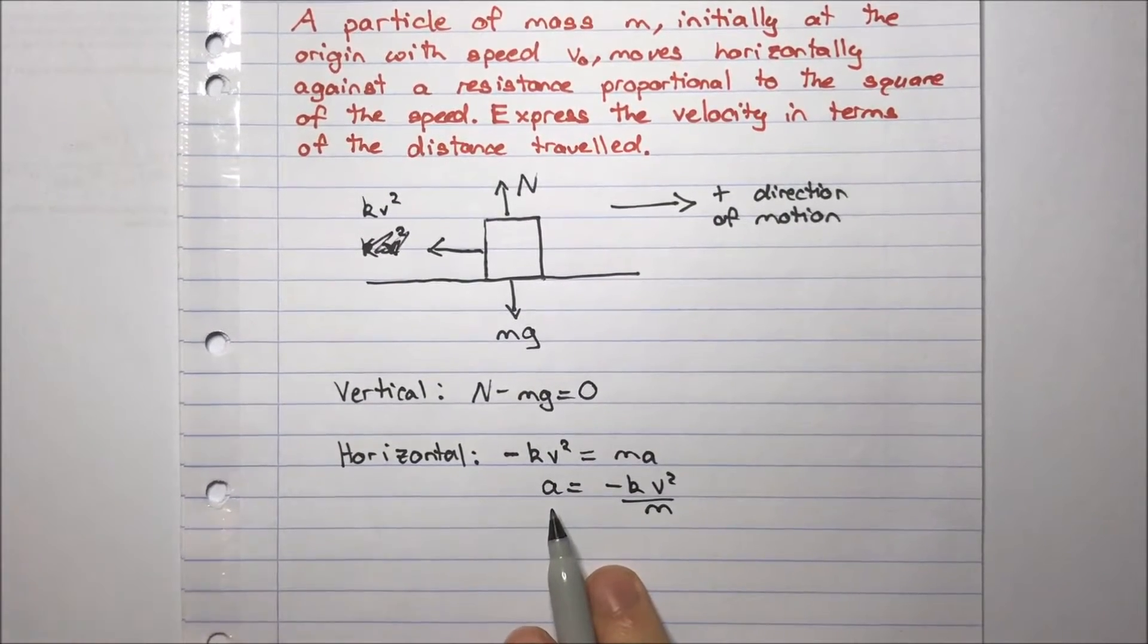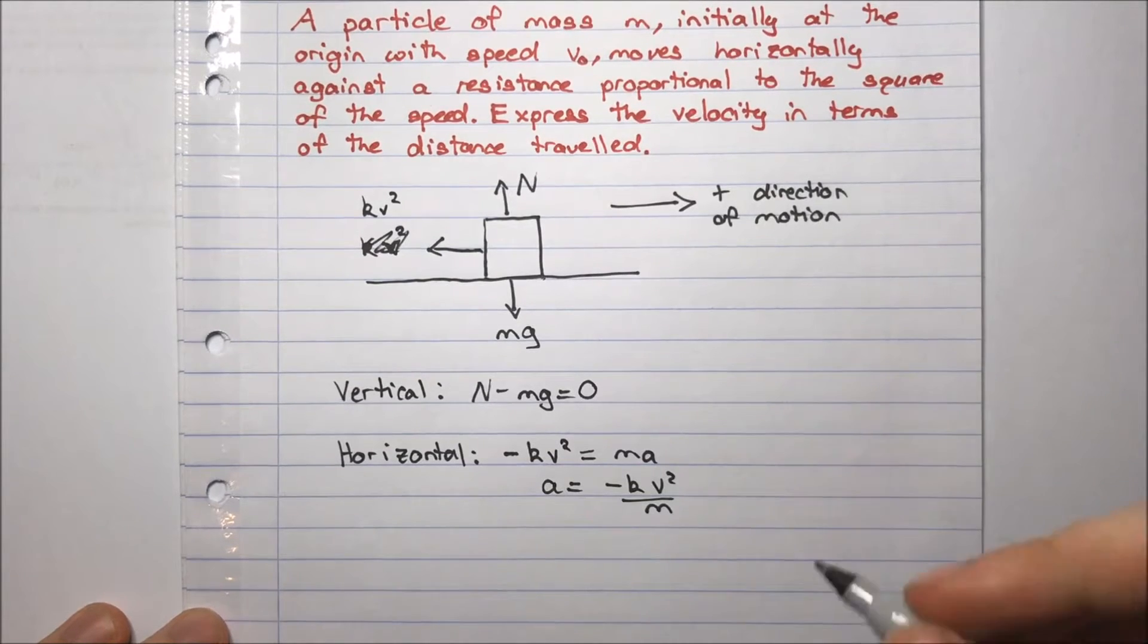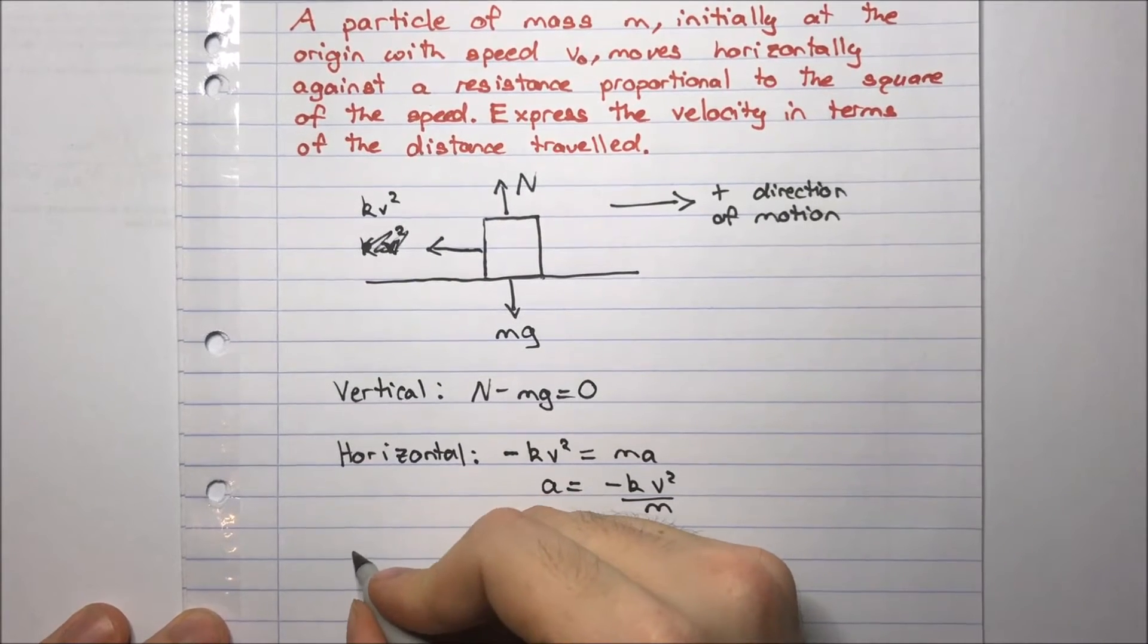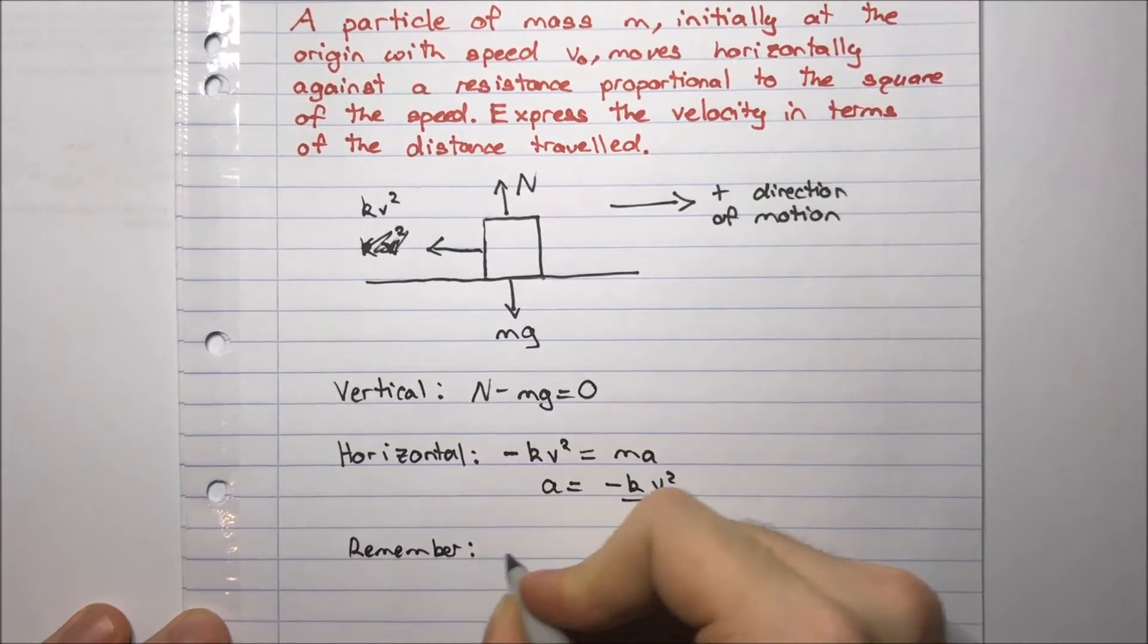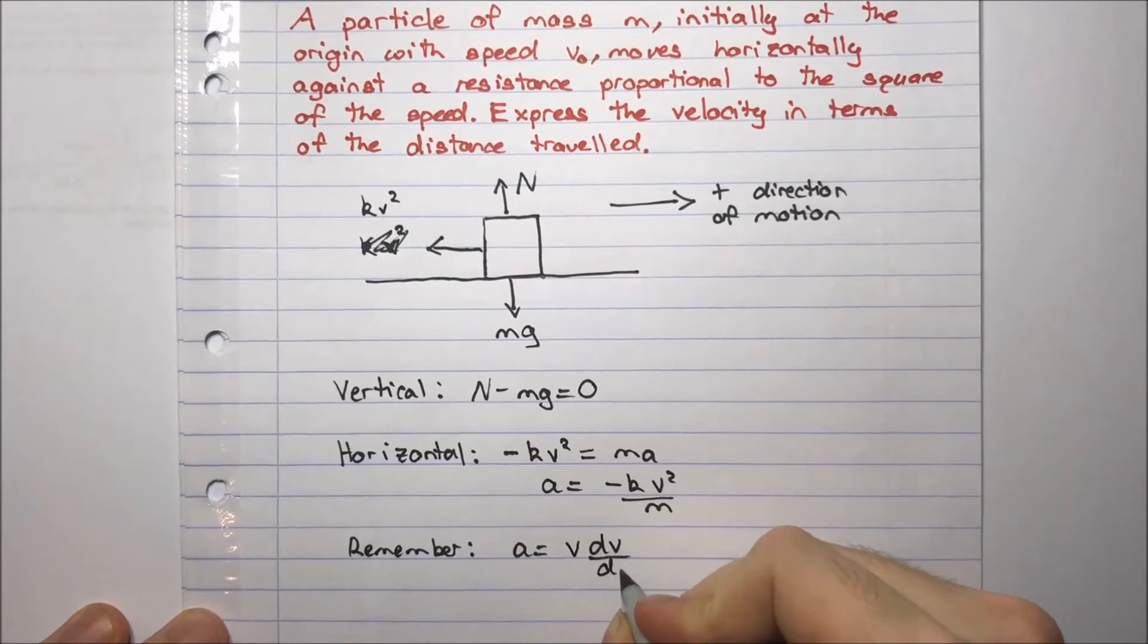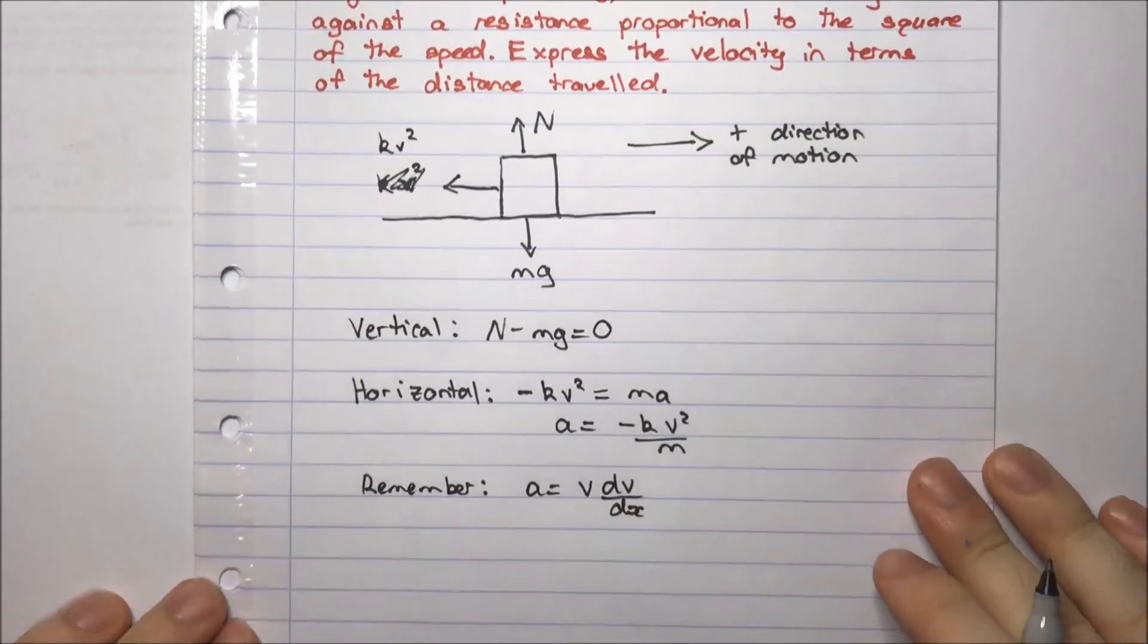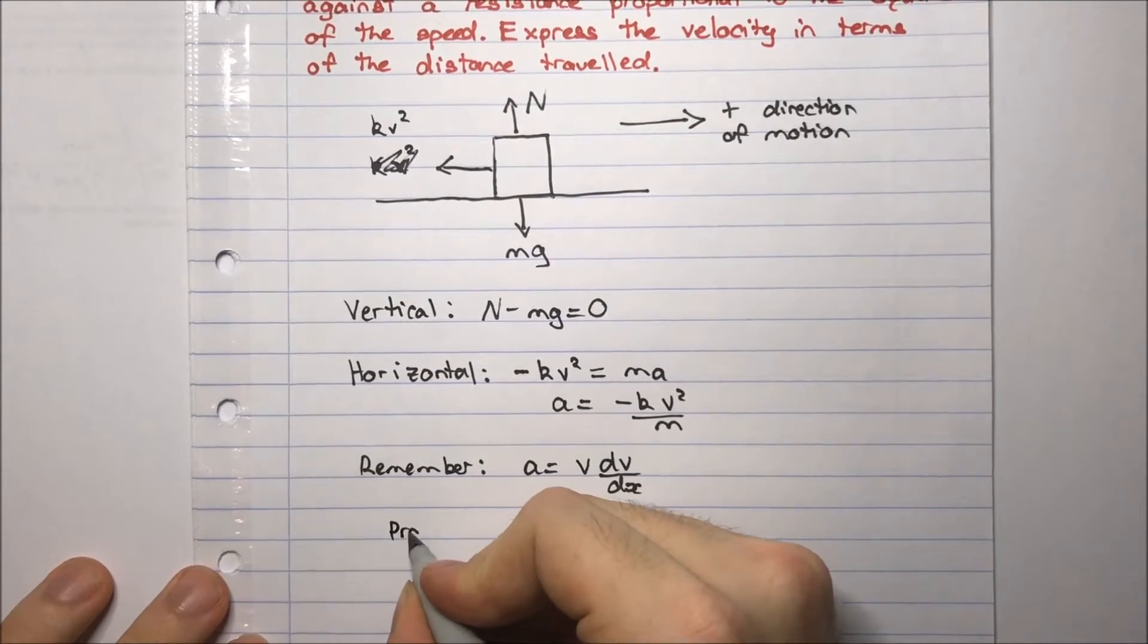And now here, we need to remember that acceleration, there's a special way that we can write acceleration which we will need in this case. So we should just remember that acceleration can equal v dv/dx. So if you haven't seen this before, it's very easy to see this. So a quick proof.